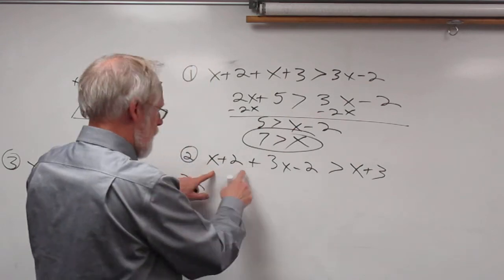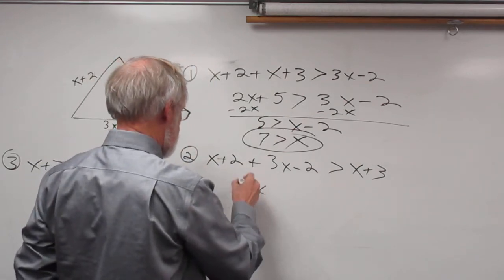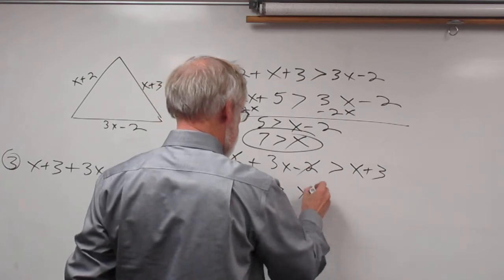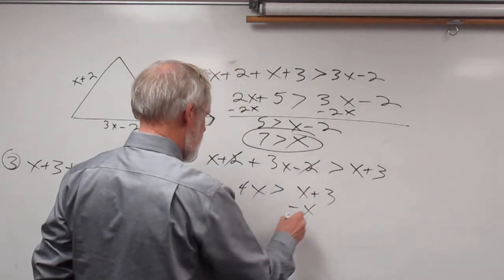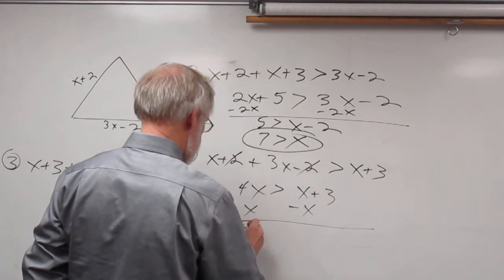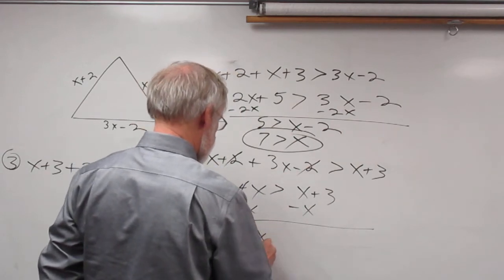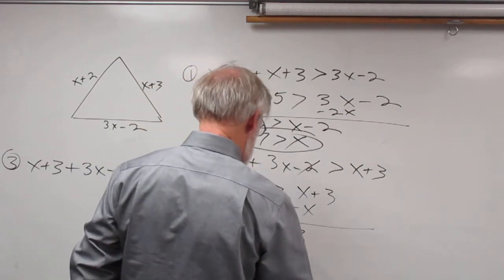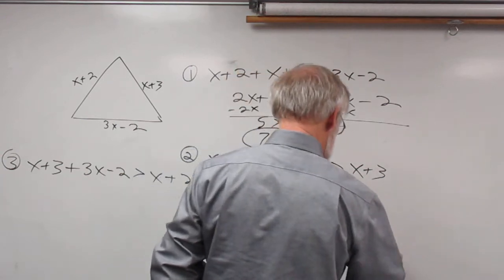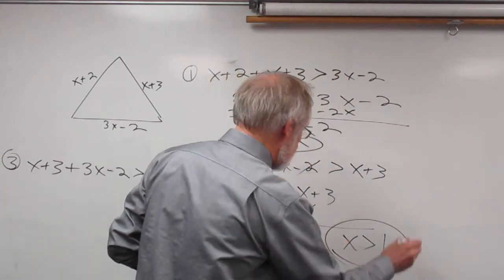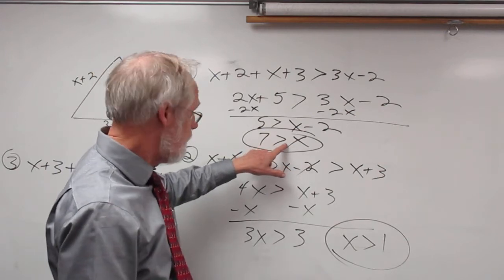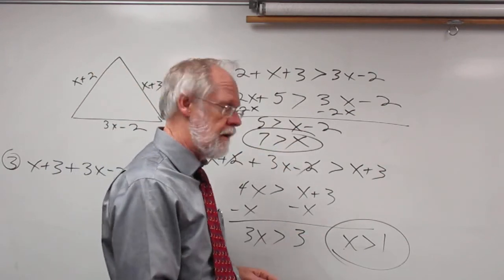Now let's try the second inequality. 4x plus 0 must be greater than x plus 3 — the plus 2 and minus 2 cancel out. Subtracting x from both sides gives 3x must be greater than 3, so x must be greater than 1. So now I have x must be less than 7 and x must be greater than 1.